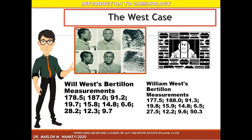It was disclosed that some of the measurements were the same but some were not, though they were closely similar. Will West measured 178.5 while William West measured 177.5. Will West measured 187.0 while William West measured 188.0. Although the Bertillon measurements of the two Wests were nearly indistinguishable, the two men's fingerprints revealed profound differences, exhibiting fingerprinting validity. Despite the similarity of appearance, names, and Bertillon measurements, the fingerprints of Will West and William West were completely different.